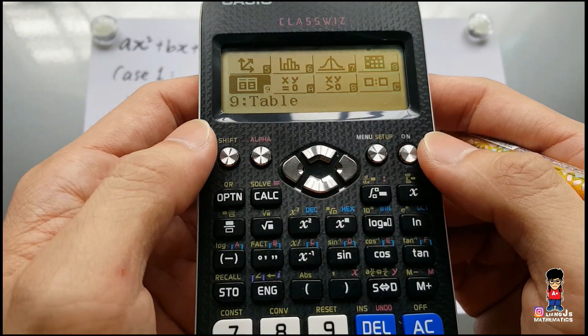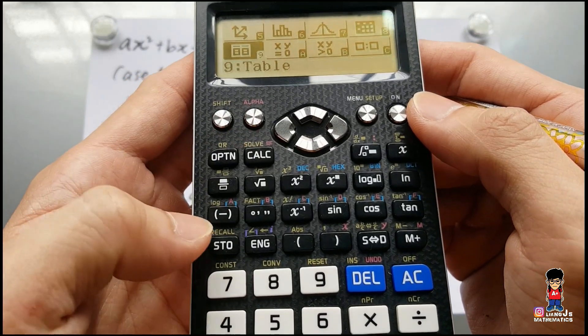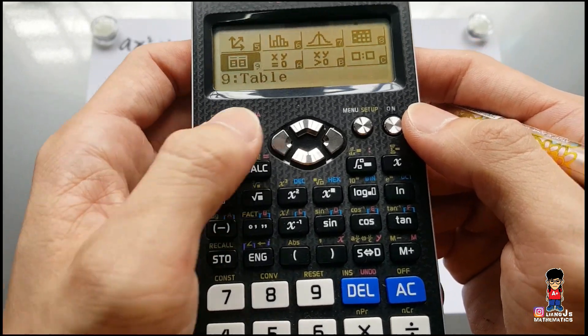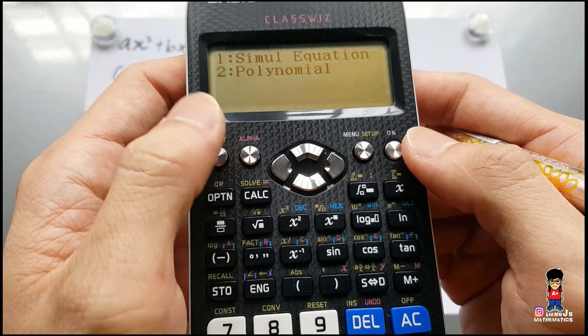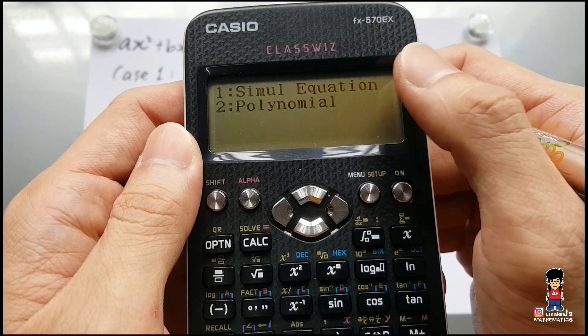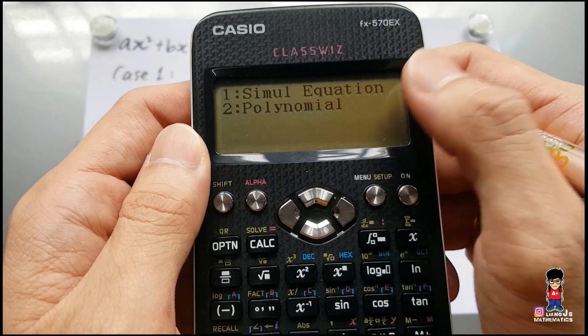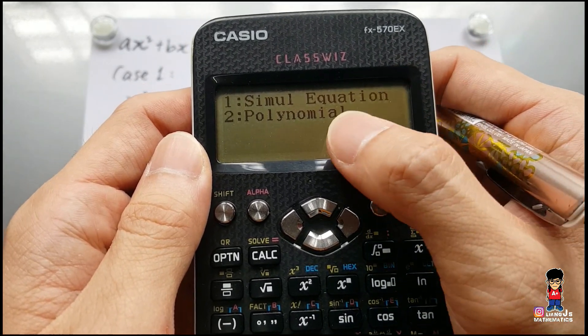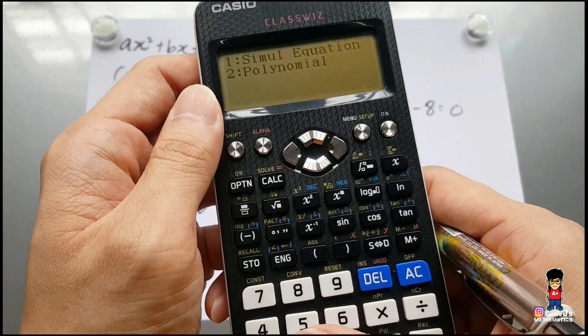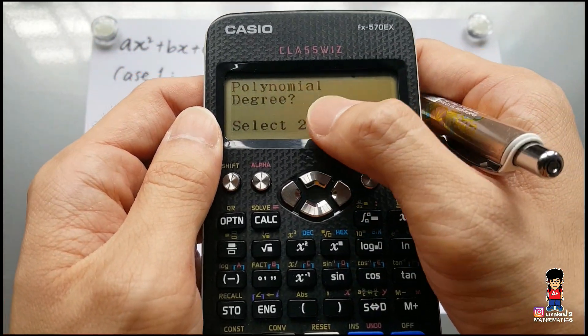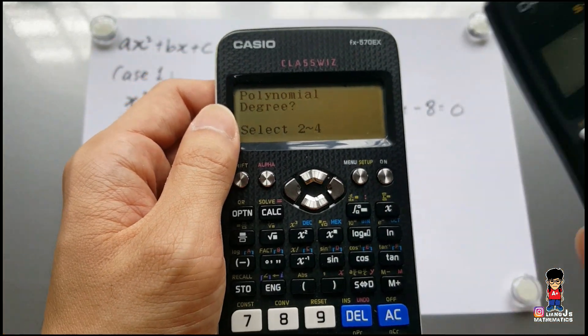Can you see, there is an A button here which is red color. You press alpha then you press this symbol. Can you see that A? So you press it then you enter into simultaneous equation and polynomial. So you will press number 2 to enter into polynomial. So you press it then it goes into degree like your first version of calculator.